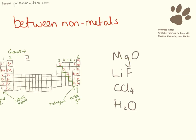So covalent bonding is between two non-metals. On your periodic table, hopefully you have drawn this squiggly line and know that everything over this side is a non-metal and everything over this side is a metal.